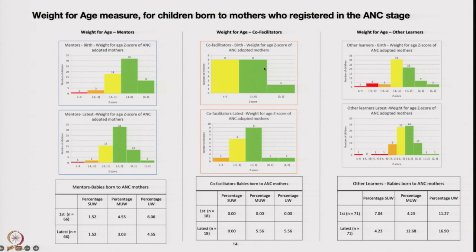For co-facilitators, all babies born to co-facilitator-adopted mothers had no low birth weight. For other learners, 71 mothers were adopted and the low birth weight rate was 11.27%. These learners had not performed well and could not teach mothers proper breastfeeding technique. When those babies were checked again, underweight had increased from 11% to 16–17%. Unfortunately, in India there is so much growth faltering occurring because of not teaching proper breastfeeding techniques.